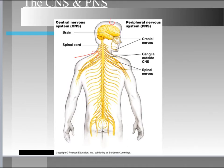On a more complex level, looking deeper within the brain, it also regulates our heart rate, breathing, blood pressure, coughing, sneezing, and more. Everything we do is essentially cognitively and emotionally linked to the brain. Injury to the brain can certainly cause an array of signs and symptoms.